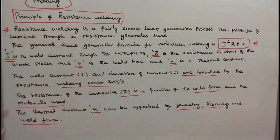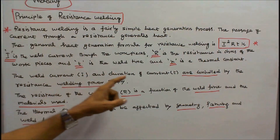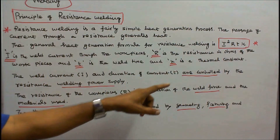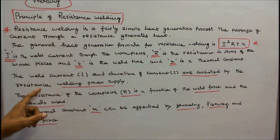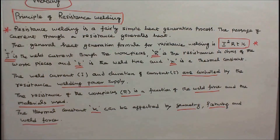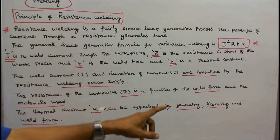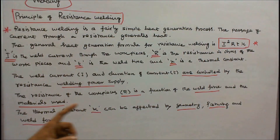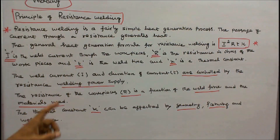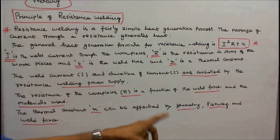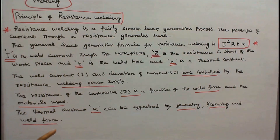The weld current I and duration of current T are controlled by the resistance welding power supply. The resistance of the workpieces R is a function of the weld force and the materials used. The thermal constant K can be affected by geometry, fixturing, and weld force.